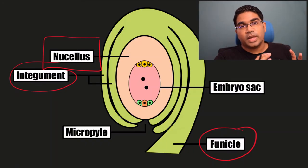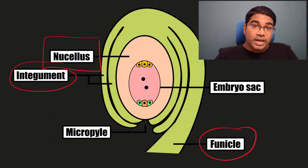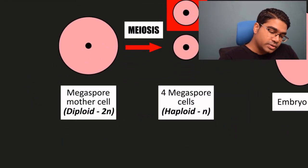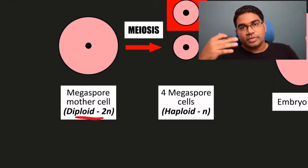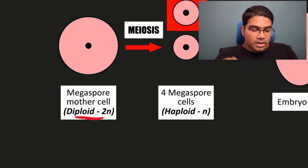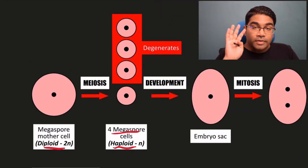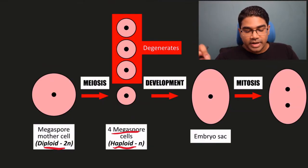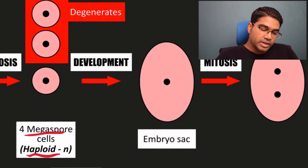The embryo sac starts out as megaspore mother cells, which are also diploid. The processes are very similar to the development of the pollen grain. The first process is still meiosis — meiosis will produce four megaspore cells, and these cells are haploid. Out of the four megaspore cells, three are going to degenerate and only one will survive. That one megaspore cell is going to develop into the embryo sac.